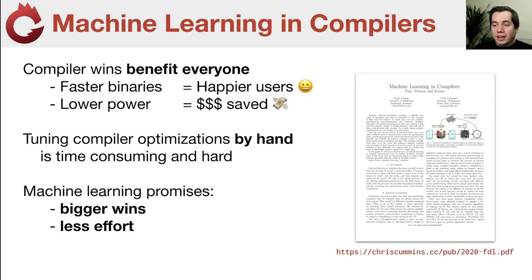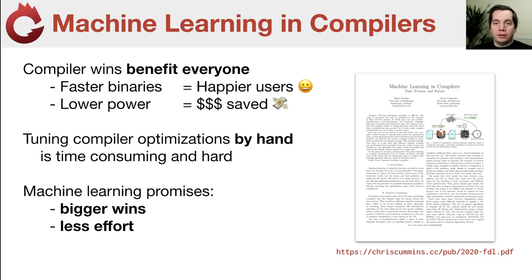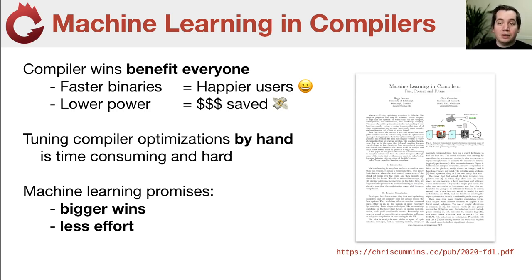Today we're going to be talking about machine learning and compilers. Why do we care? Because if you can get an optimizing compiler to produce better code, then everyone benefits. You can produce faster binaries, which means your users are happier. You can shave the energy consumption of your programs, which can reduce the amount of power needed, which can save lots and lots of money.